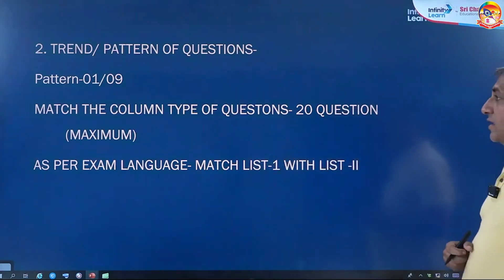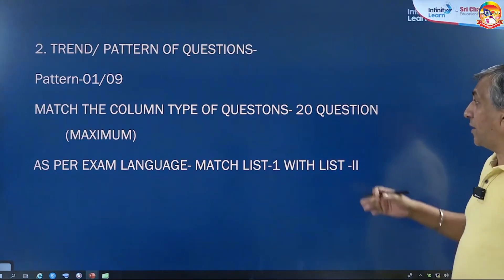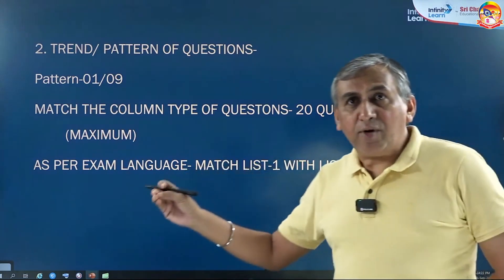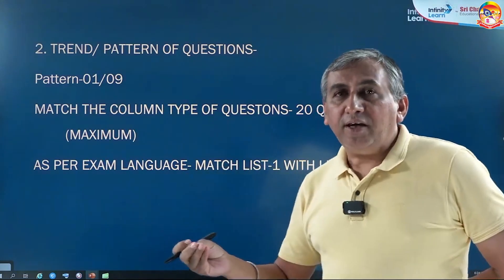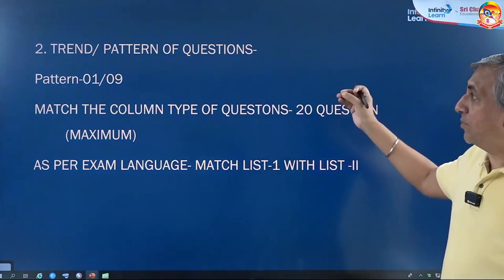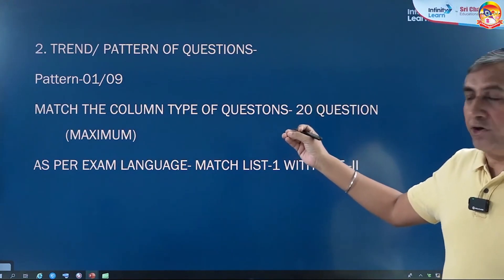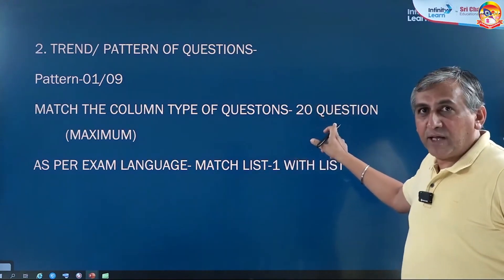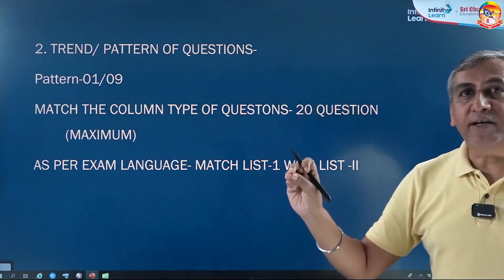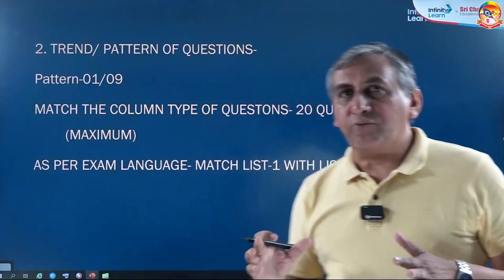The first type of pattern is the match-the-column type of question. Their weightage is maximum — up to 20 questions — because smart reading gives you more marks. PYQs help identify what the patterns of questions are. In biology, the maximum questions asked are match-the-column type. They look lengthier but they will give you 100% marks because they are easy.